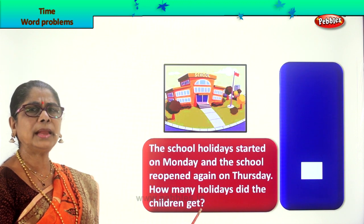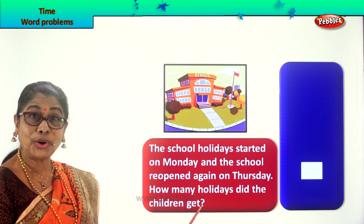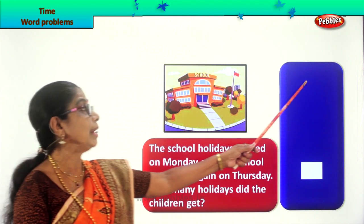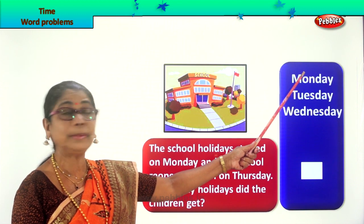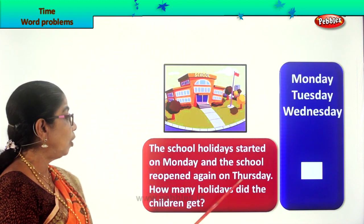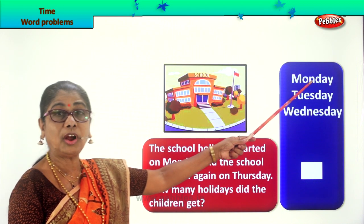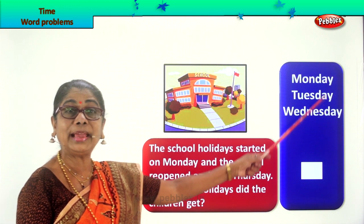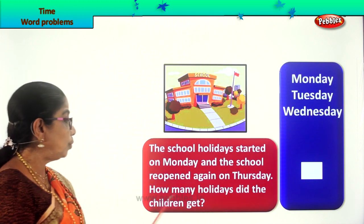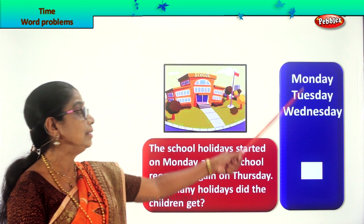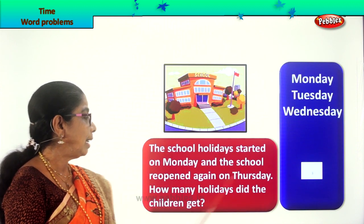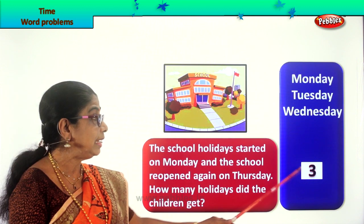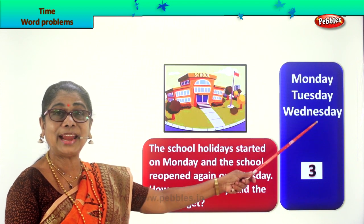So we have to count the number of days of holiday. The school holidays started on Monday, so we write down: Monday. Then the school reopened on Thursday. So Monday you got a holiday, Tuesday you got a holiday, and Wednesday. So you get three days, because the school reopened on Thursday. How many holidays did the children get? The children got three days of holidays — Monday, Tuesday, and Wednesday.